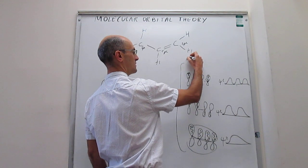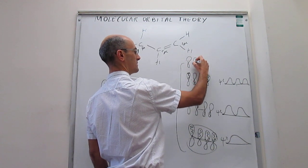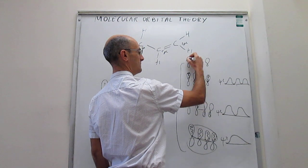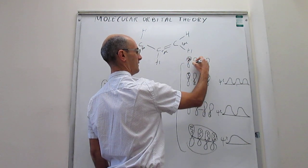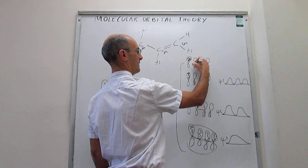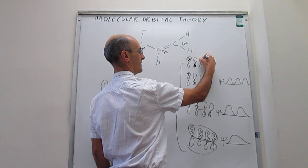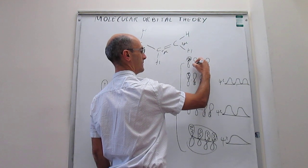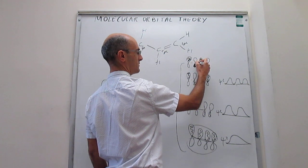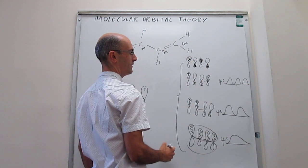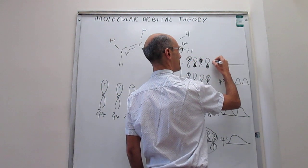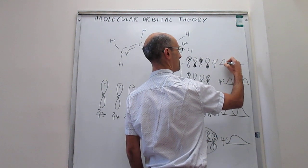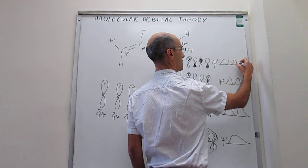The last linear combination — the fourth molecular orbital — has all orbitals completely out of phase, giving three nodes. Drawing psi-squared for this orbital shows three nodes. That is how the four molecular orbitals of butadiene look.